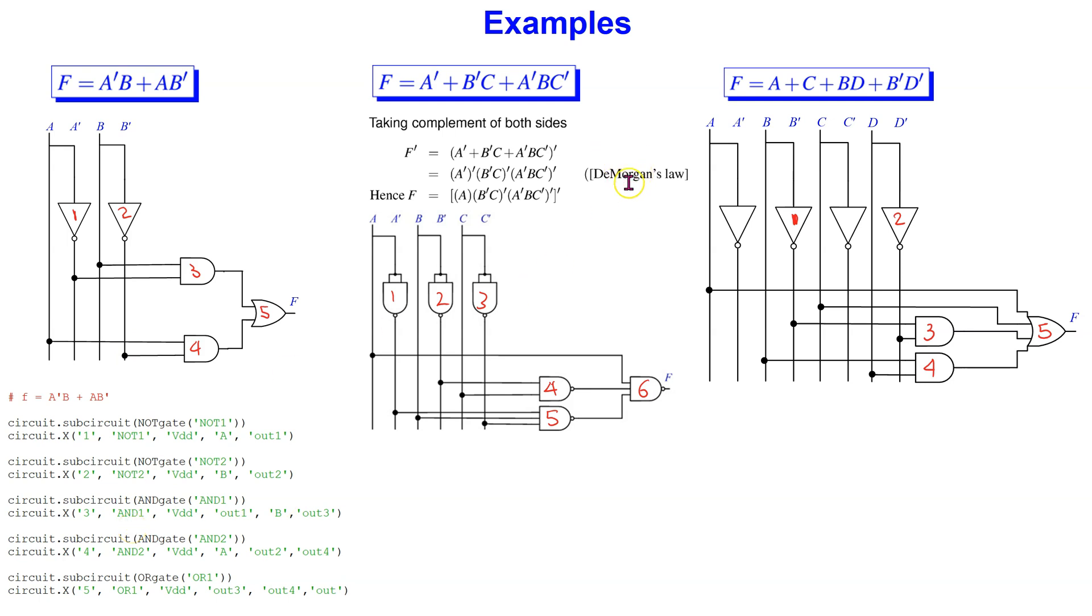Using DeMorgan's law, it is also possible to do NAND only implementations. The Python codes for these three examples with two, three and four digital inputs respectively are available in the comments section below.